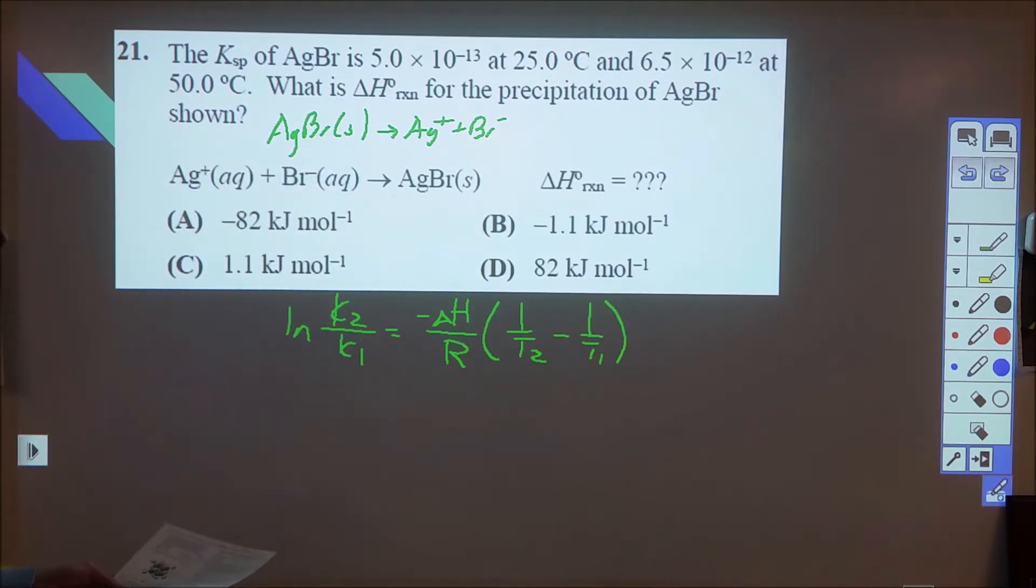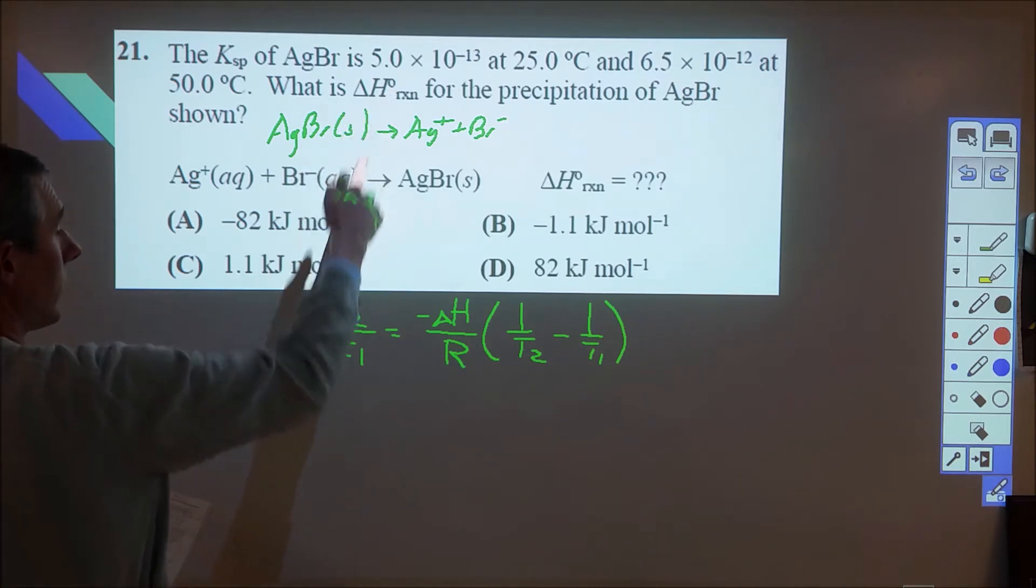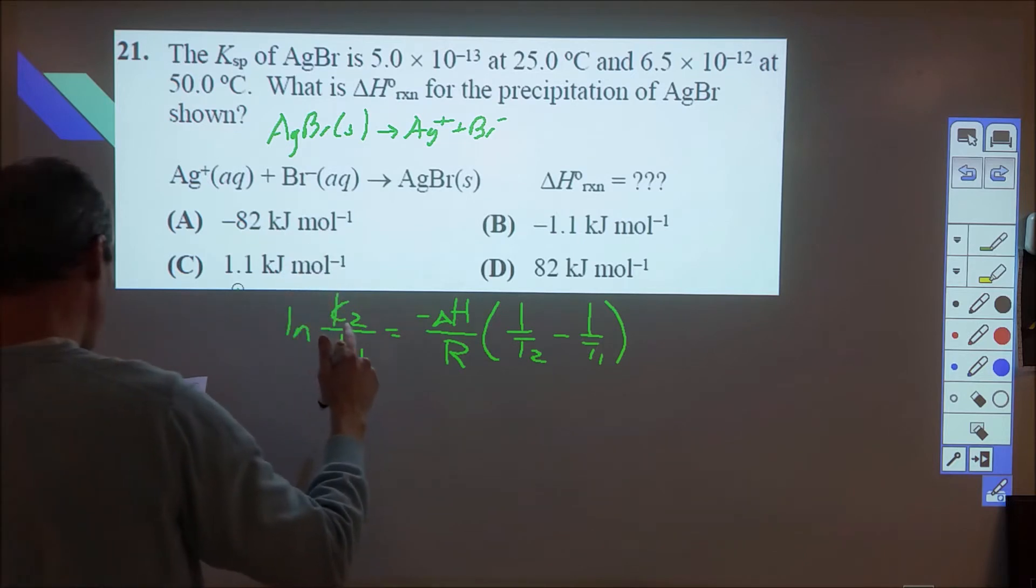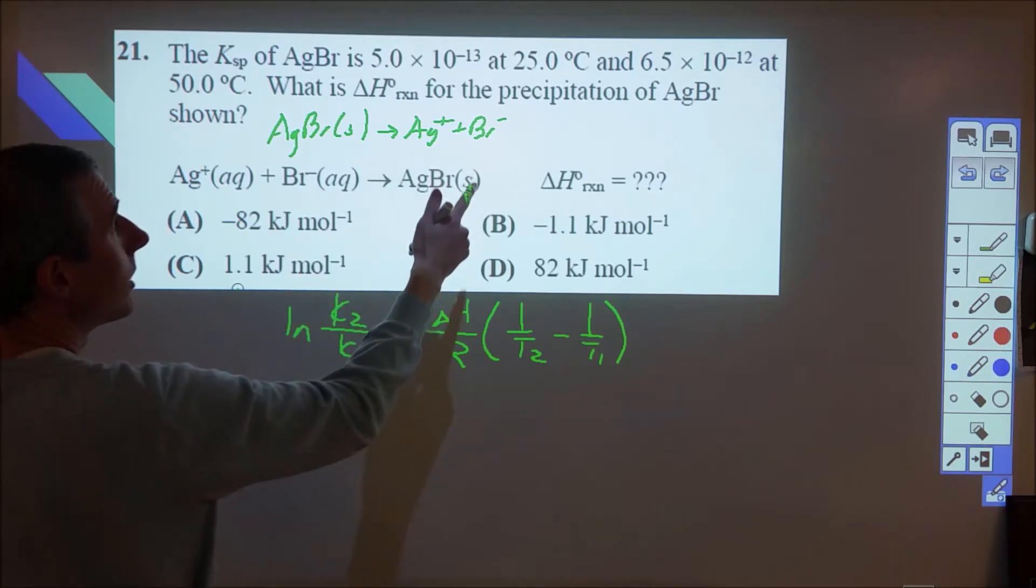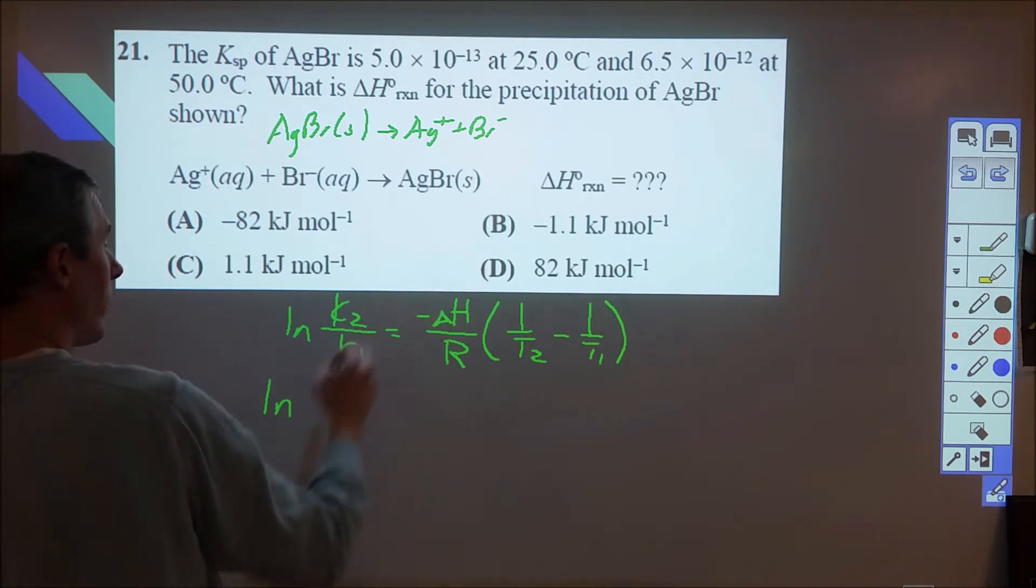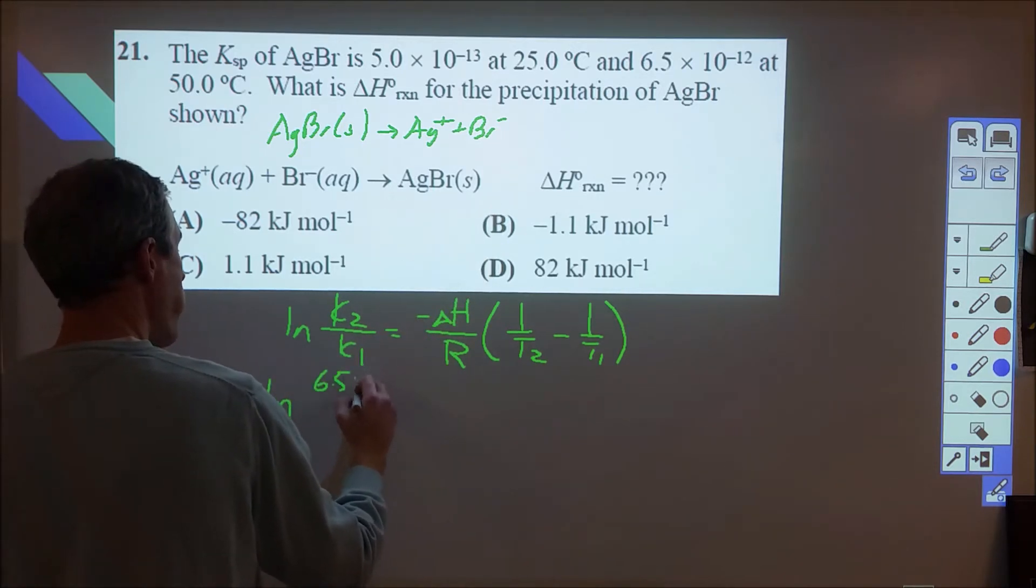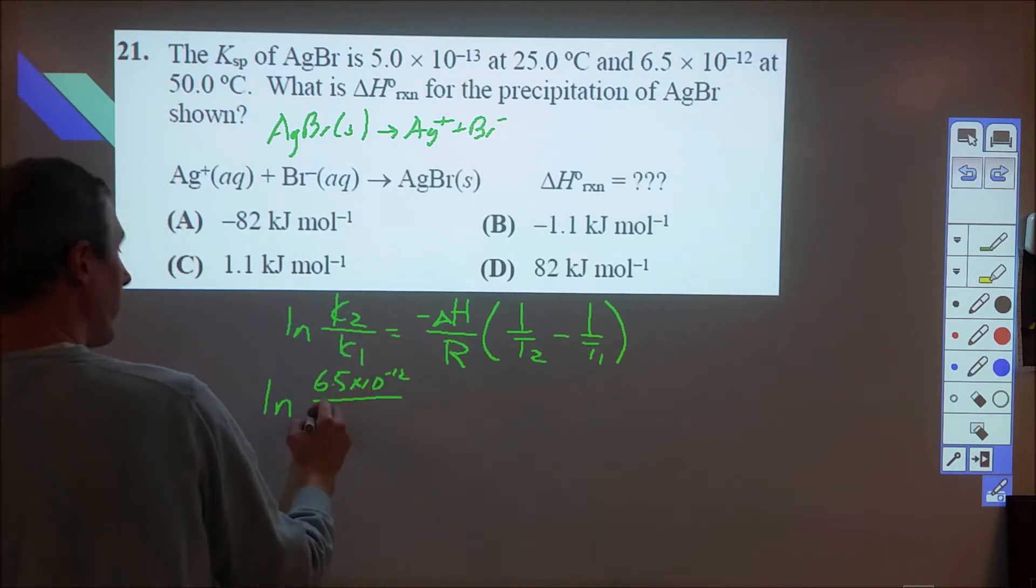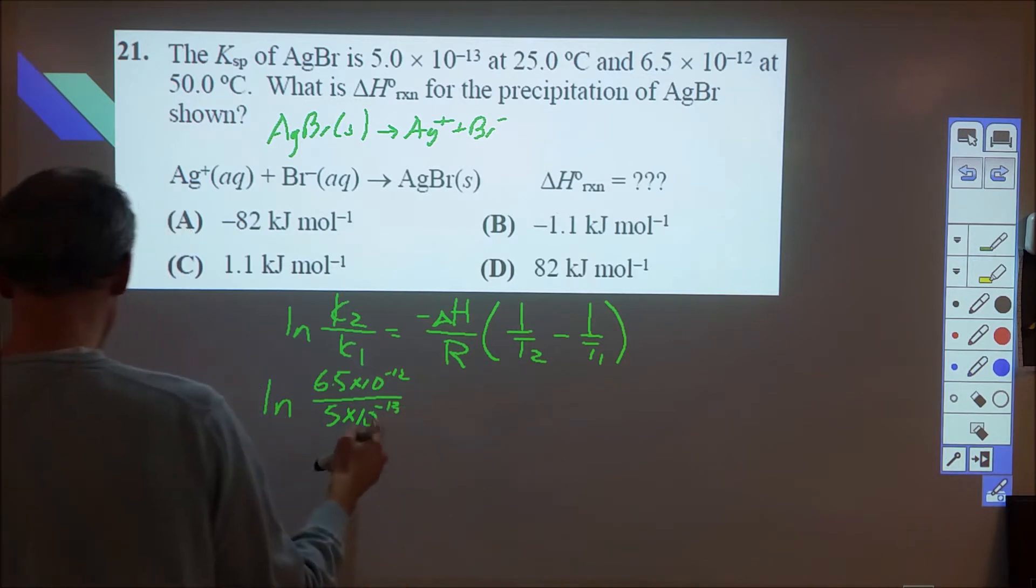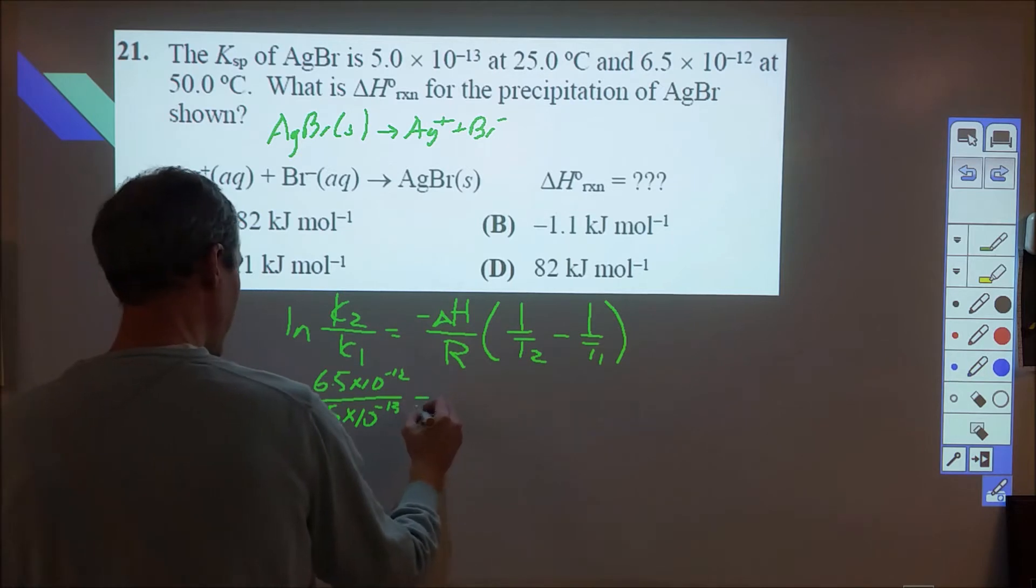So we're going to plug everything into here. We're going to do some plugging and chugging. We should pick one set, it doesn't matter which one you do, you just need to make sure that you're consistent with it. The one that I did was I plugged in the larger as K2, so I plugged in 6.5 times 10 to the negative 12 over the 5 times 10 to the negative 13. And I actually plugged it in as just the value of that, which was 13, and that came out to be 2.56.